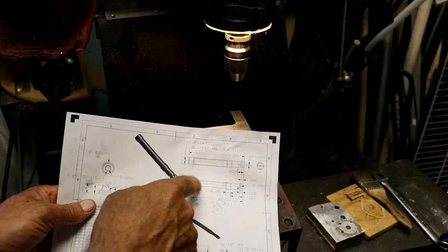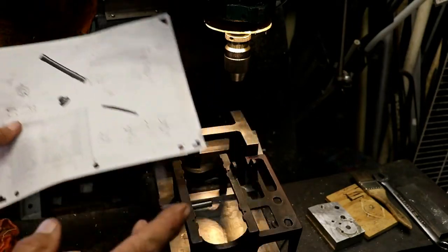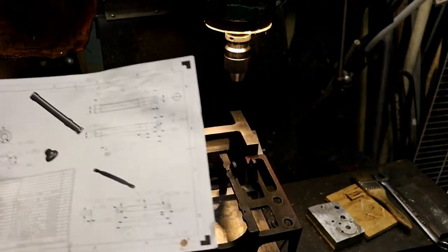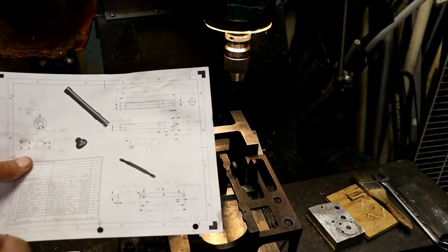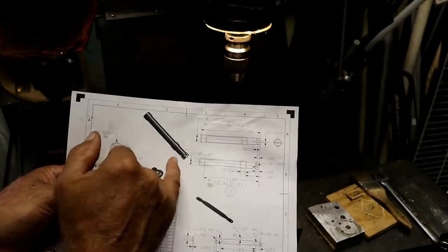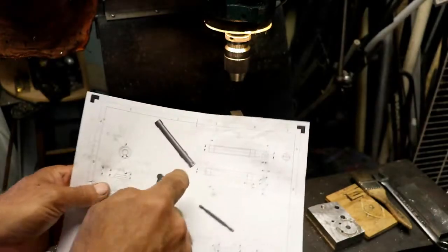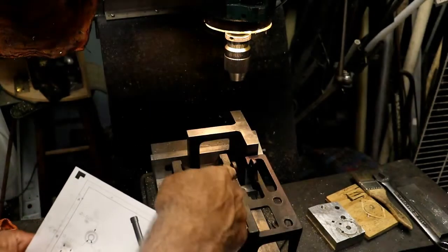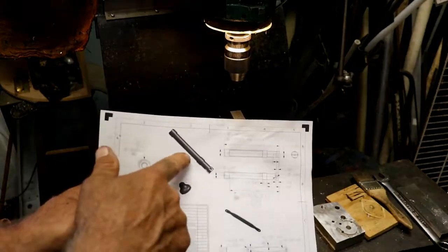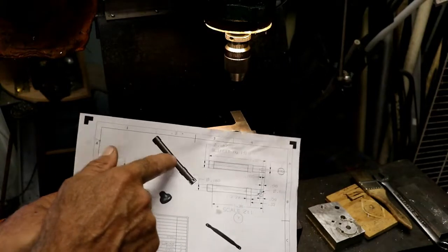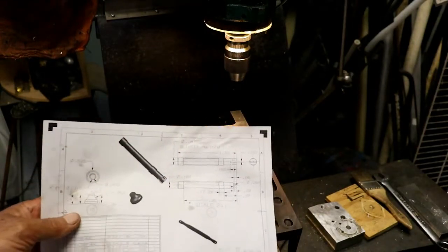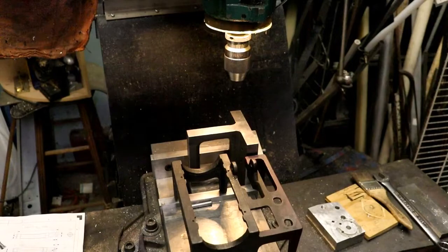This is about the last part to make, and a little nipple for on the side for the airline to hook to. When I come back after I get the bushings pressed in place, we'll go ahead and start on the slide valve.